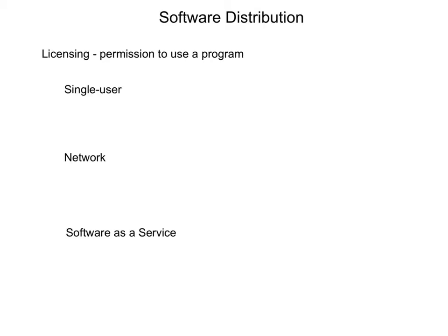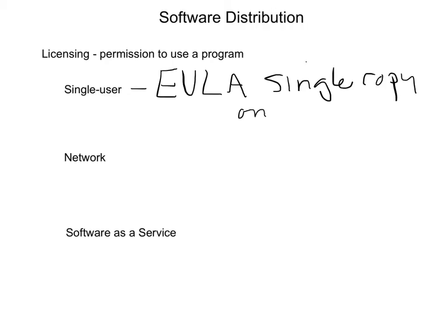Cost, ownership, and licensing. On your computers at home, you don't actually own Microsoft Word — you have a software license. A license gives you buying permission to use the program. At home, you buy a single user license, called an end user license agreement, which means you can have a single copy on one computer. That's most common for homeowners.